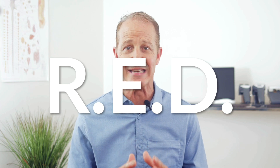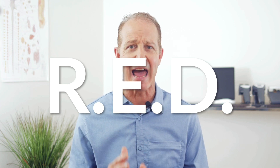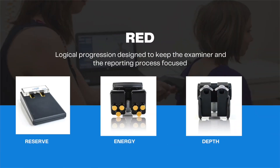The Insight Scanning System offers a thorough analysis of the functioning nervous system and is not limited to measuring spinal function alone. To assist in the process of interpretation of scans, a simplified approach has been created known as RED. RED is an acronym that stands for Reserve, Energy, and Depth. Reports and synapse are designed to follow RED, a logical progression designed to keep the examiner and the reporting process focused on a sequence that defines the global impact of the subluxation and the adjustment.